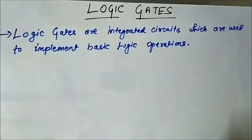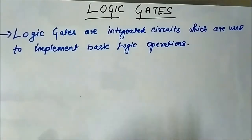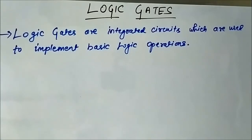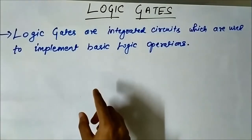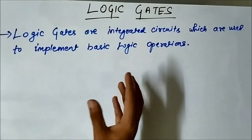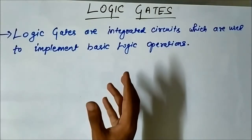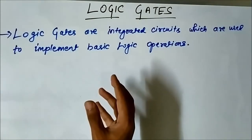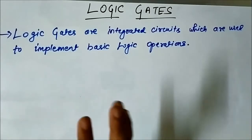The basic definition of a logic gate is that it is an integrated circuit that is used to implement the basic logic operations. By basic logic operations I refer to the NOT operation or the inversion operation, the AND operation, the OR operation.